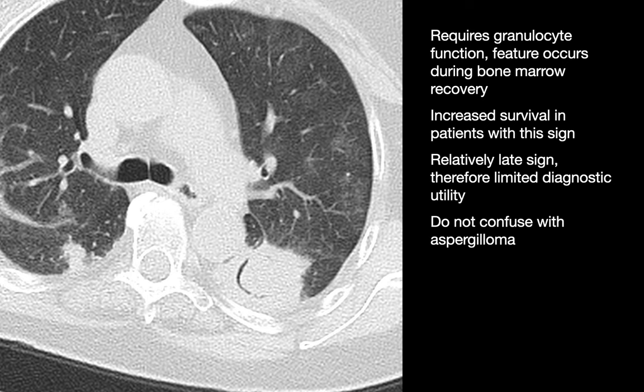Hemorrhagic lung nodules may be observed in what settings? Settings in which we may see a hemorrhagic lung nodule — a solid nodule with a ground glass halo — include invasive fungal infection like invasive aspergillosis, sometimes hypervascular metastases, and granulomatosis with polyangiitis (formerly Wegener's), which can present as nodules with hemorrhage around them. Also in some cases of biopsied lung nodules.